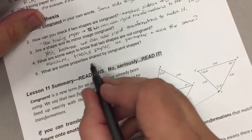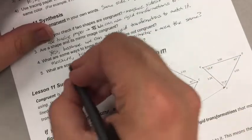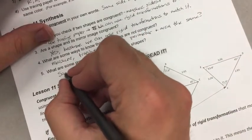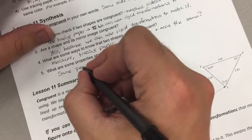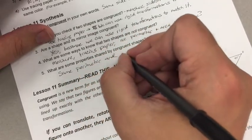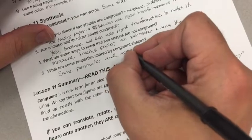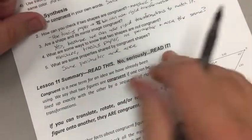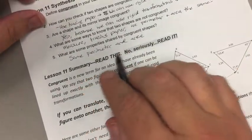What are some properties shared by congruent shapes? That would be same perimeter and area - not one or the other, both of them. Both of those have to be true.